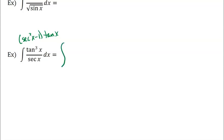So when I do secant squared, I'm going to distribute here. So secant squared times tangent divided by secant — one of those secants cancels out and I'm left with secant x times tangent x, which is nice because I know that that's the derivative of secant. And then I've got negative 1 times tangent divided by secant. I can actually simplify that — tangent divided by secant would be sine over cosine times cosine, which is just sine. So: negative sine x dx.